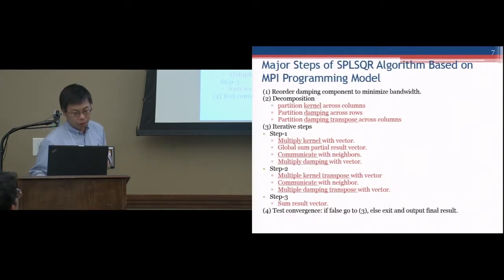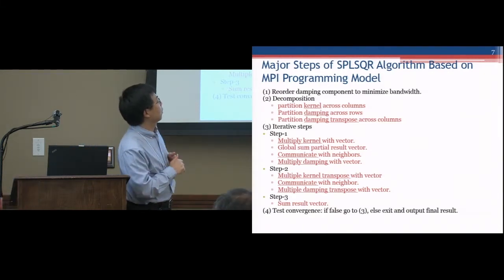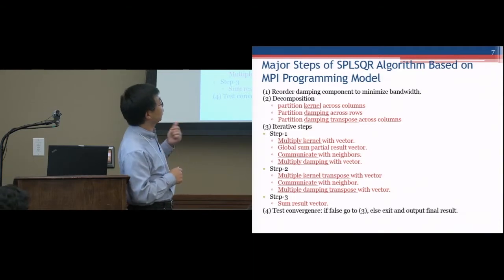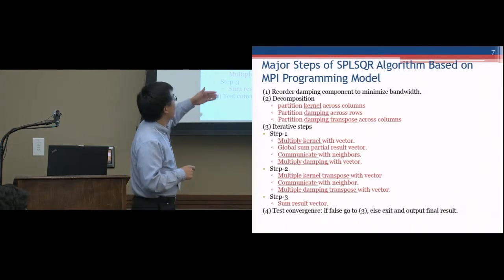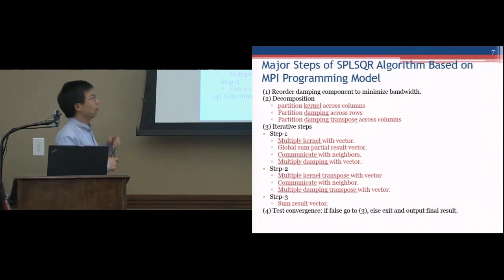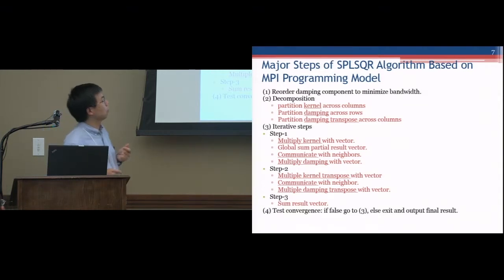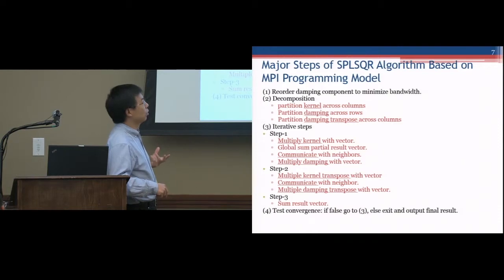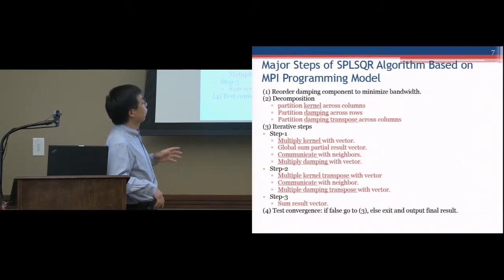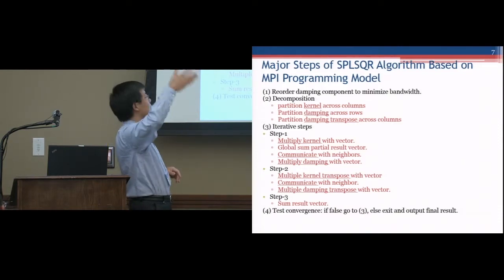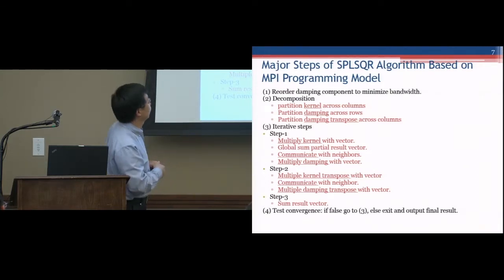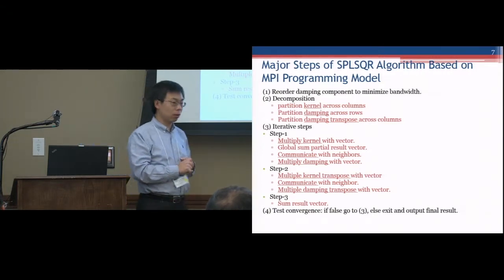We call our algorithm the Scalable Parallel LSQR algorithm, or SP-LSQR. In the approach, initially in the first step, we reorder the damping component to minimize the bandwidth. The second step, we do the decomposition and partition. We partition the kernel across columns and partition the damping across rows. And partition the damping transpose across columns — those are two different partition approaches.